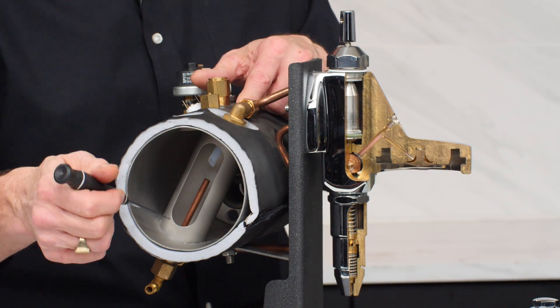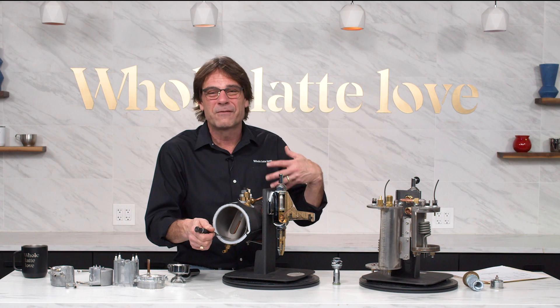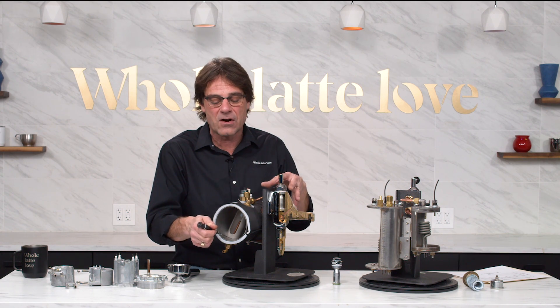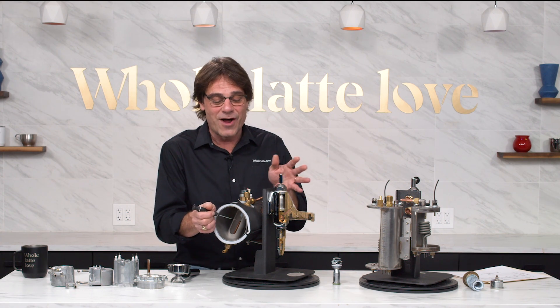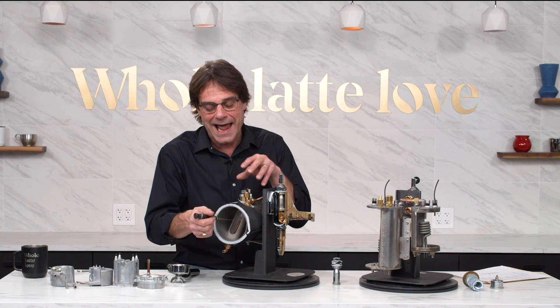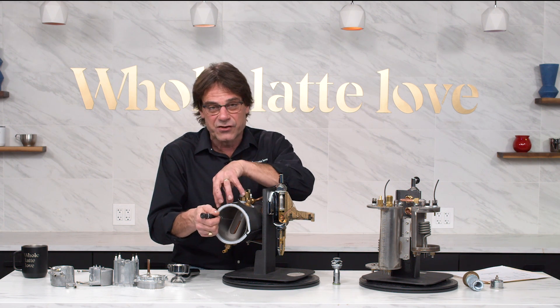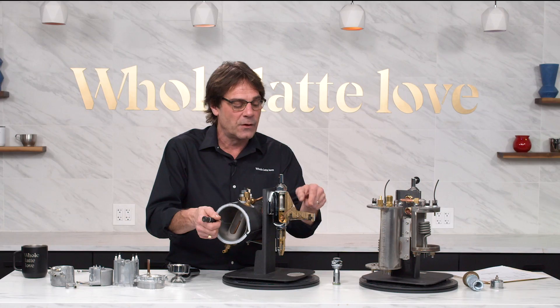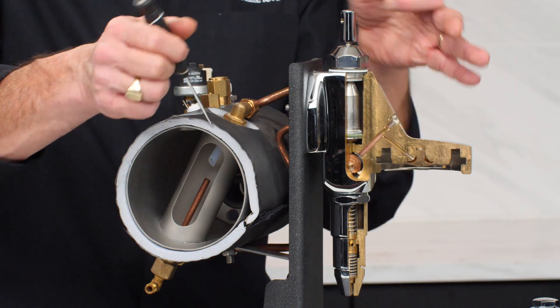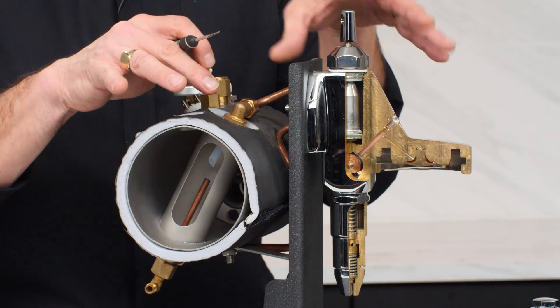So it just exchanges heat into this section. Now we have an E61 group on this machine. So there's a constant thermosiphon that happens. So even when the machine is just sitting idle, water is always flowing out to the group here. So it comes off the top through convection, out to the group, circulates through this area right here, then back down into the bottom of the boiler.